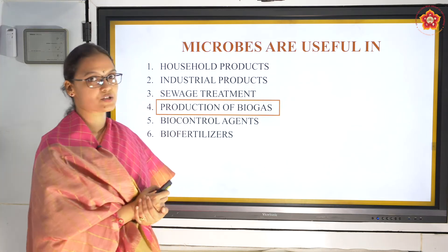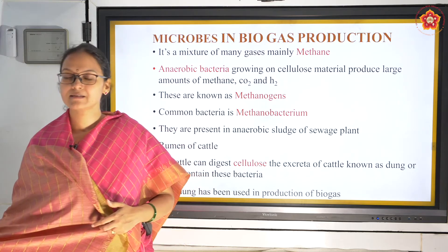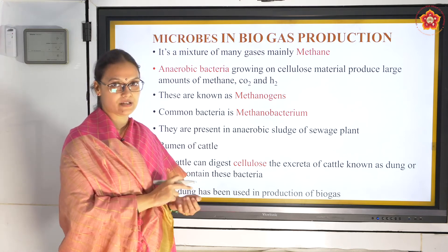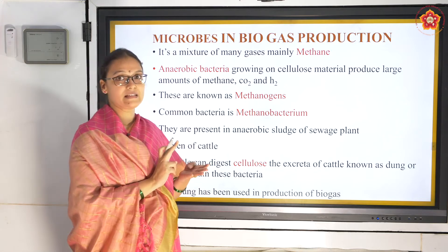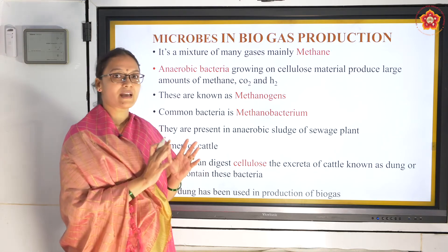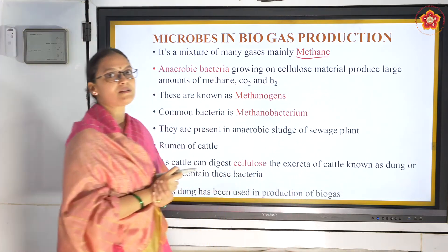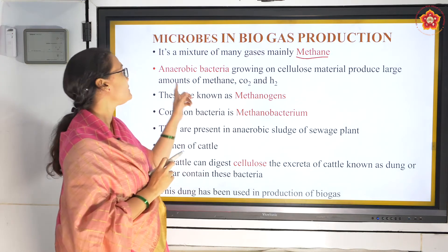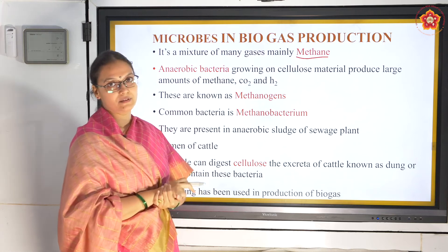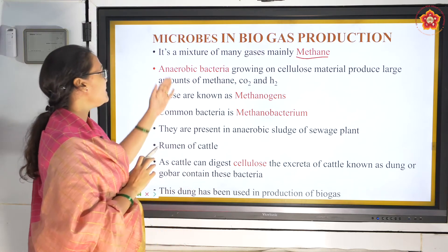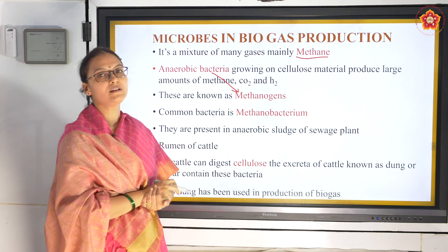Next we are moving to production of biogas. Biogas is a combination of gases - it contains carbon dioxide, hydrogen sulfide, hydrogen, and methane, but the main gas is methane. This is produced by anaerobic bacteria. When they act on cellulose, methane is produced. These anaerobic bacteria are called methanogens because they produce methane.